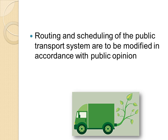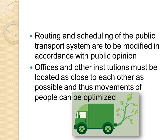Routing and scheduling of the public transport system is to be modified in accordance with public opinion. Offices and other institutions must be located as close to each other as possible so that the movement of people can be optimized. In a city center, all offices and institutions are concentrated. This is a way to keep our transport system sustainable and minimize vehicles on remote roads.